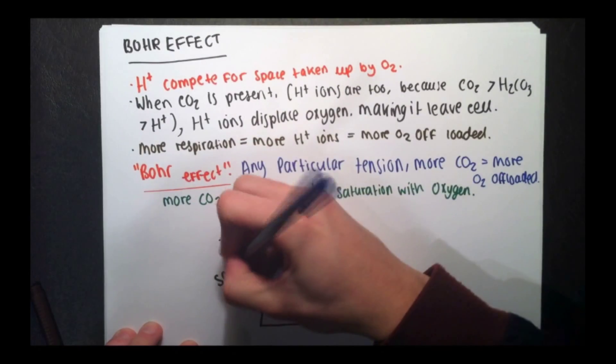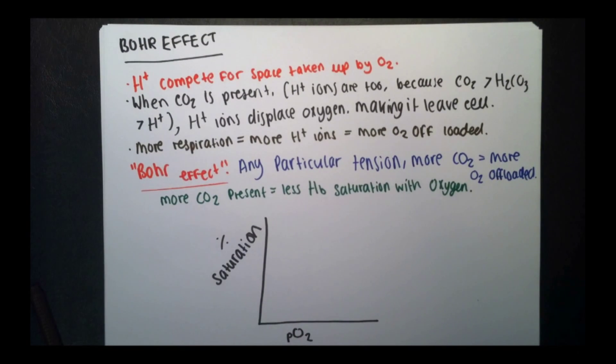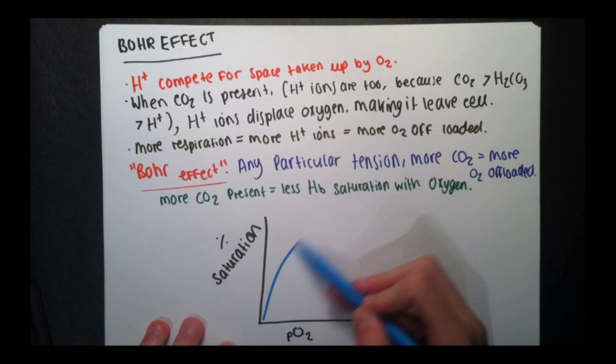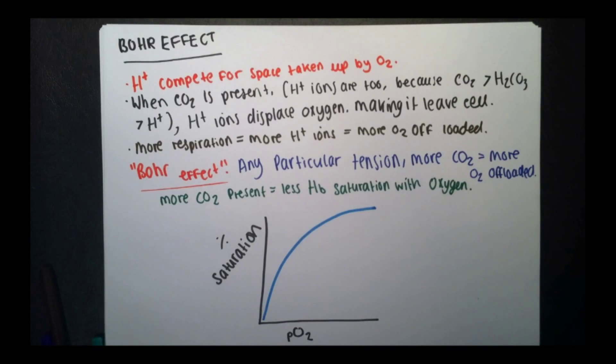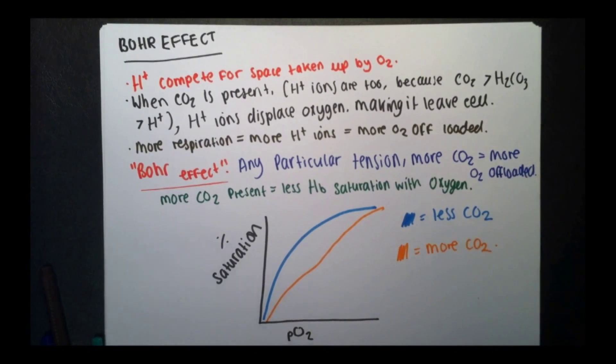So this graph shows the saturation with oxygen, the hemoglobin, and the pressure of oxygen. The blue curve shows a lower partial pressure of CO2, which means there's less CO2 there, and the orange curve shows a higher partial pressure of CO2.